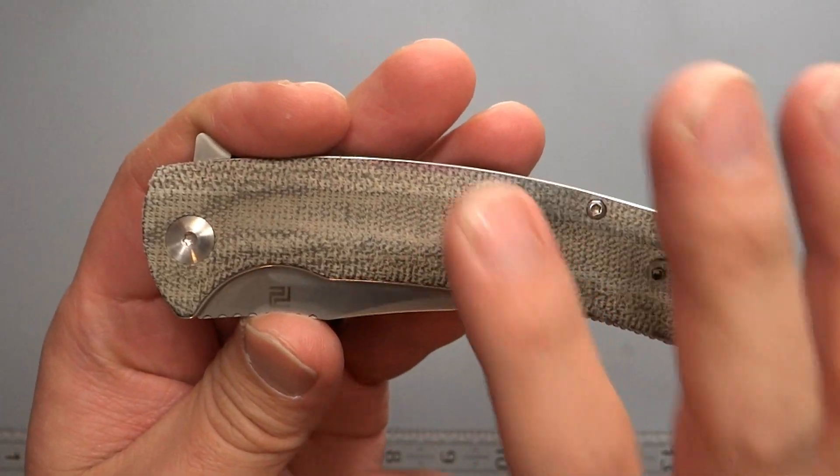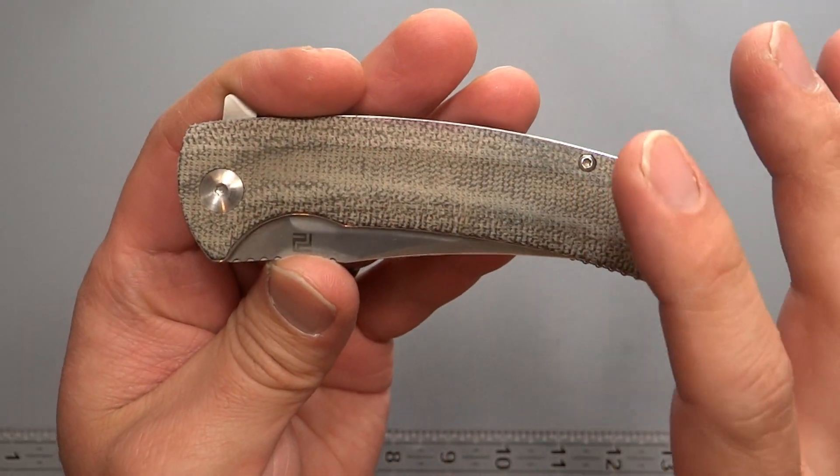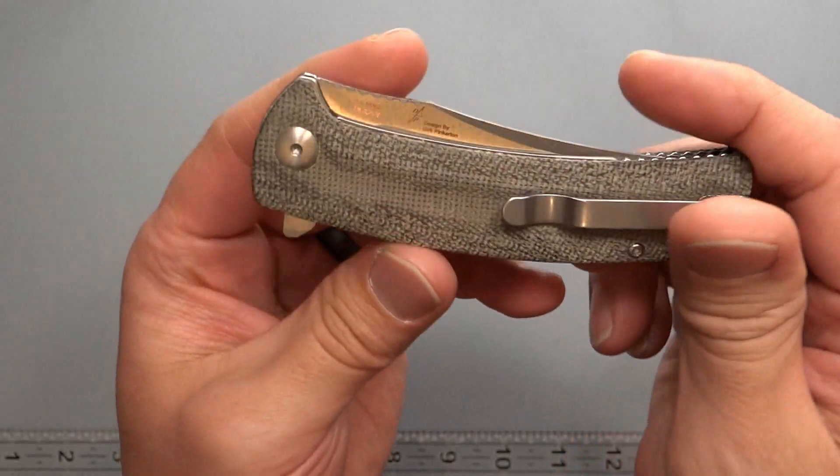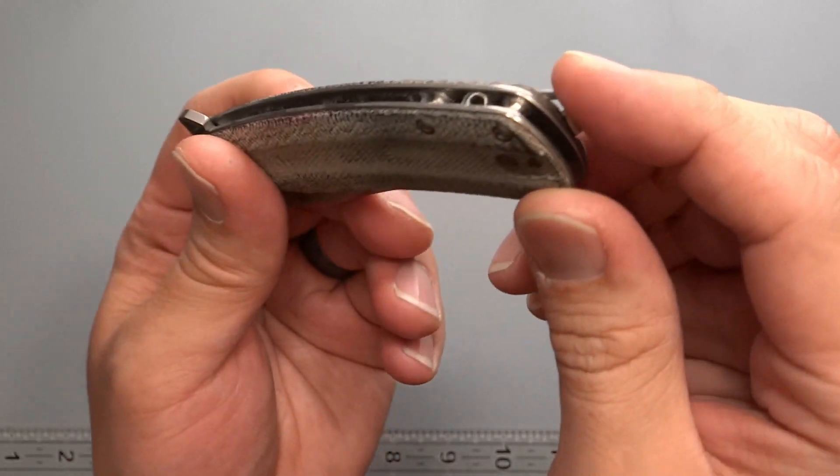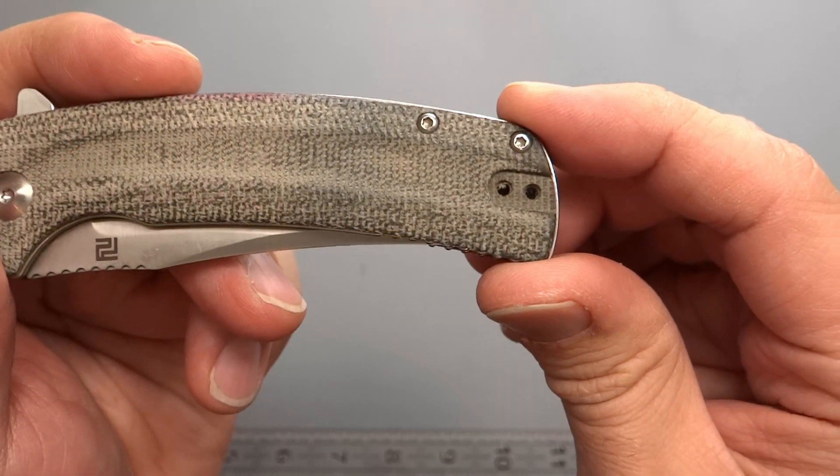That's one thing that I do like about micartas in more of a natural state. I don't really like the polished side because you're kind of taking away from that grip that it adds for micarta. This one's going to be a right hand left hand carry. So you can basically flip that clip around to the other side.